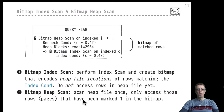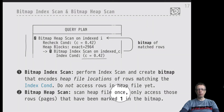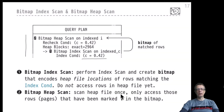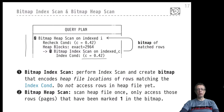Once we have built the bitmap, we pass it to the second operator, the bitmap heap scan, which will then access the heap file. The bitmap heap scan scans the heap file once, from left to right — sequential IO — using the bitmap as a guide telling us which particular pages contain hits, rows that we need to retrieve. If the bitmap is in fine granularity mode, it will even tell us which rows on those pages match the index condition.